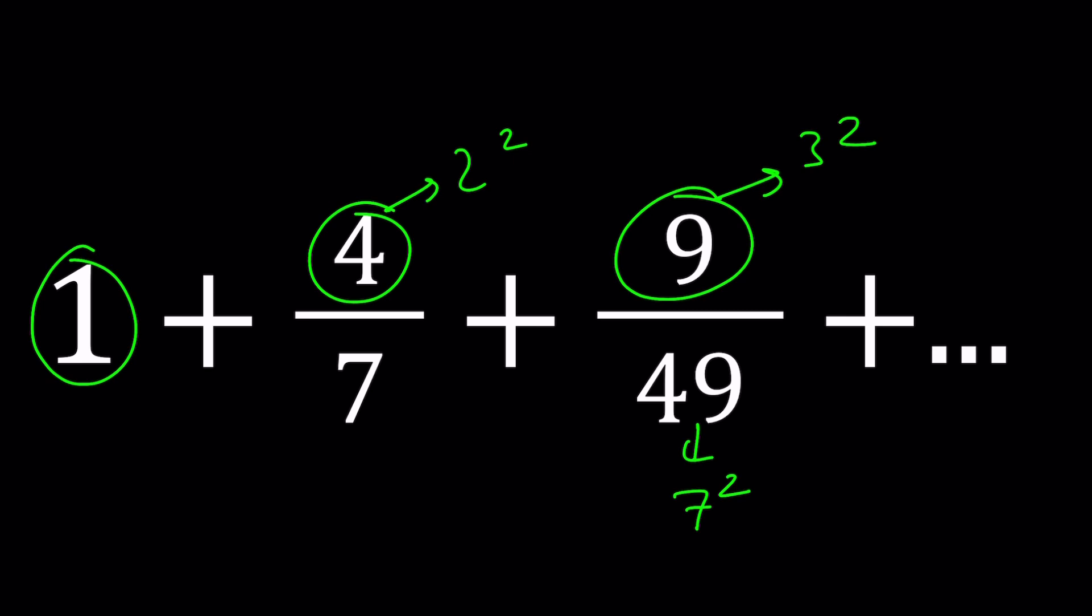So one thing that varies here is the numerators. Numerators are perfect squares. So the next term would be 4 squared. But what is it going to be divided by? That's given by powers of 7. So even though all the terms are different, the denominators are powers of 7. We don't have a 7 here but we could easily write it as 7 to the 0th power.